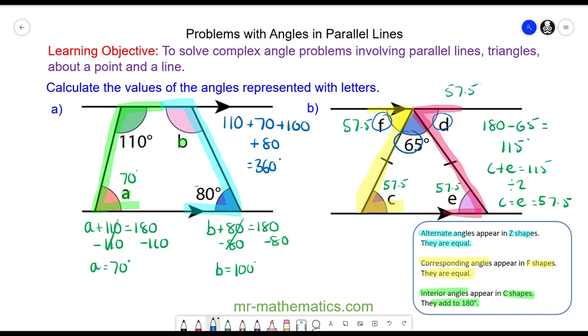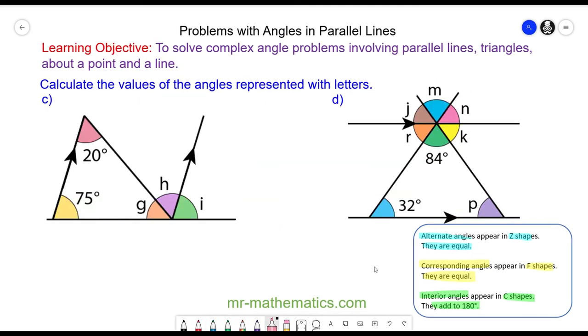Okay, let's try some more questions. You can try and work out angle G, H, and I in question C and all the angles in question D. You can pause the video and resume it when you're ready. For angle H, you can see it is alternate with the 20 degree angle because they both lie along a Z shape. So angle H will also be 20 degrees.